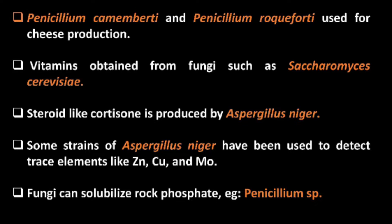Two species of Penicillium are used for cheese production. Vitamins are obtained from fungi such as Saccharomyces cerevisiae. Cortisone is produced by Aspergillus niger. Aspergillus niger has also been used to detect trace elements like zinc, copper, and molybdenum. Fungi can solubilize rock phosphate — example: Penicillium species.